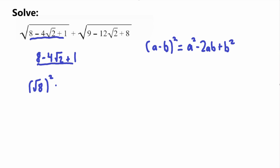Our next value is 4 times square root of 2. We can break 4 into 2 times 2, giving us 2 times 2 times square root of 2. And then plus 1, which we can write as 1 squared. Now in the middle term we need our a and b values. Our a value is square root of 8, but it's not directly visible here yet, so we need to do a little rearranging.